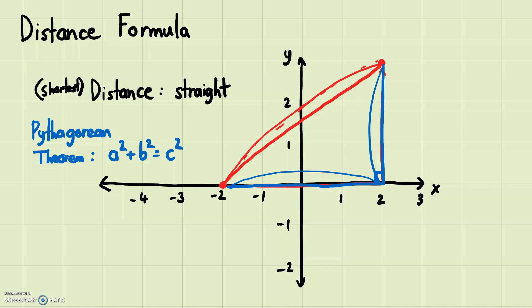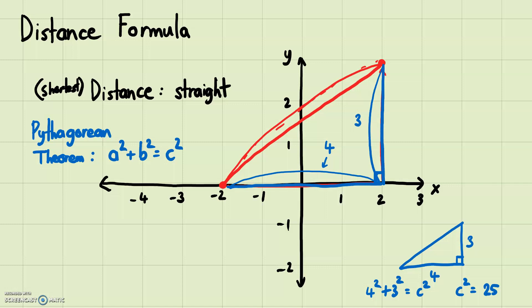We went one, two, three, four — four times that way — so that length is four. And we went three up, so that's three. So we have a right triangle where the two legs are four and three. Using the Pythagorean theorem: four squared plus three squared equals c squared, so c squared equals 25, and therefore c equals five. The distance between those two points is five.